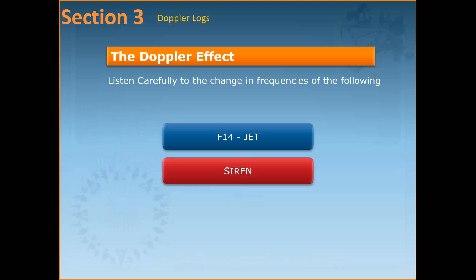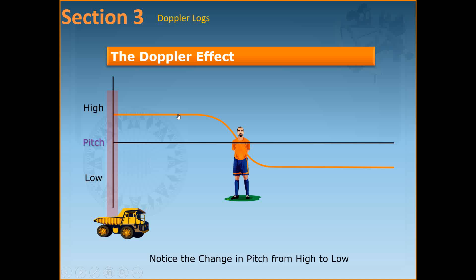The same effect is heard with fire engine or ambulance sirens. Just focus on how when the sound is far away from you the frequency is different from when the sound is nearing you, and then when the sound passes you and goes away again the frequency changes. This was the sound of a jet plane or an ambulance siren coming towards you, then passing you and going away again — just notice the change in frequency.